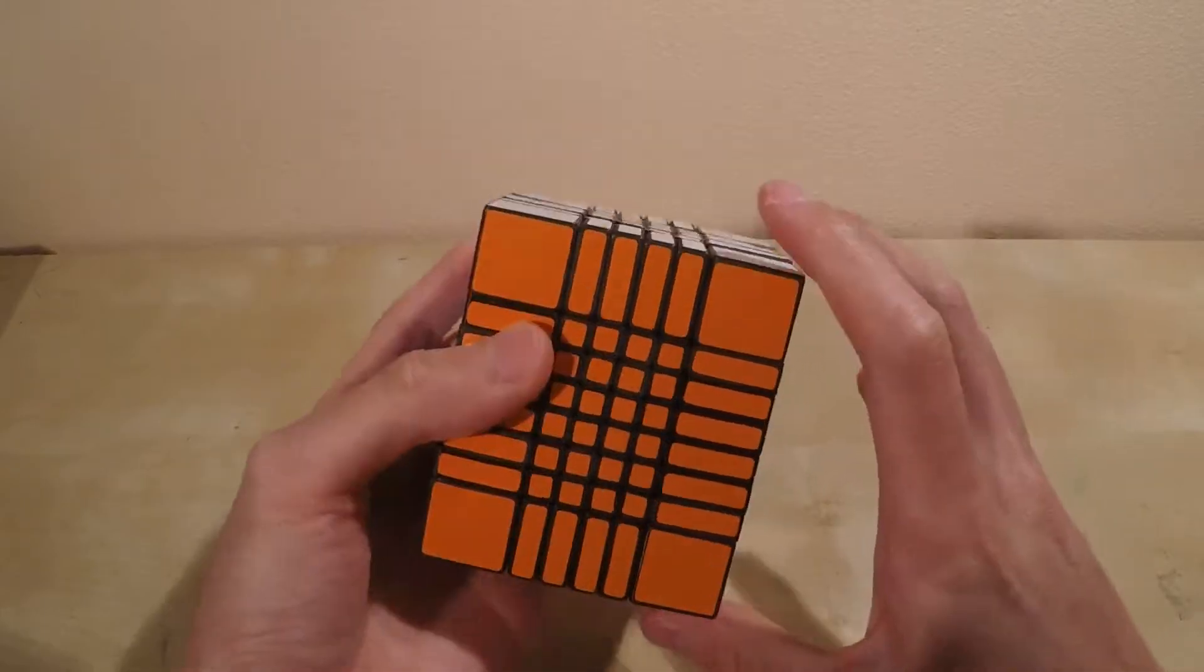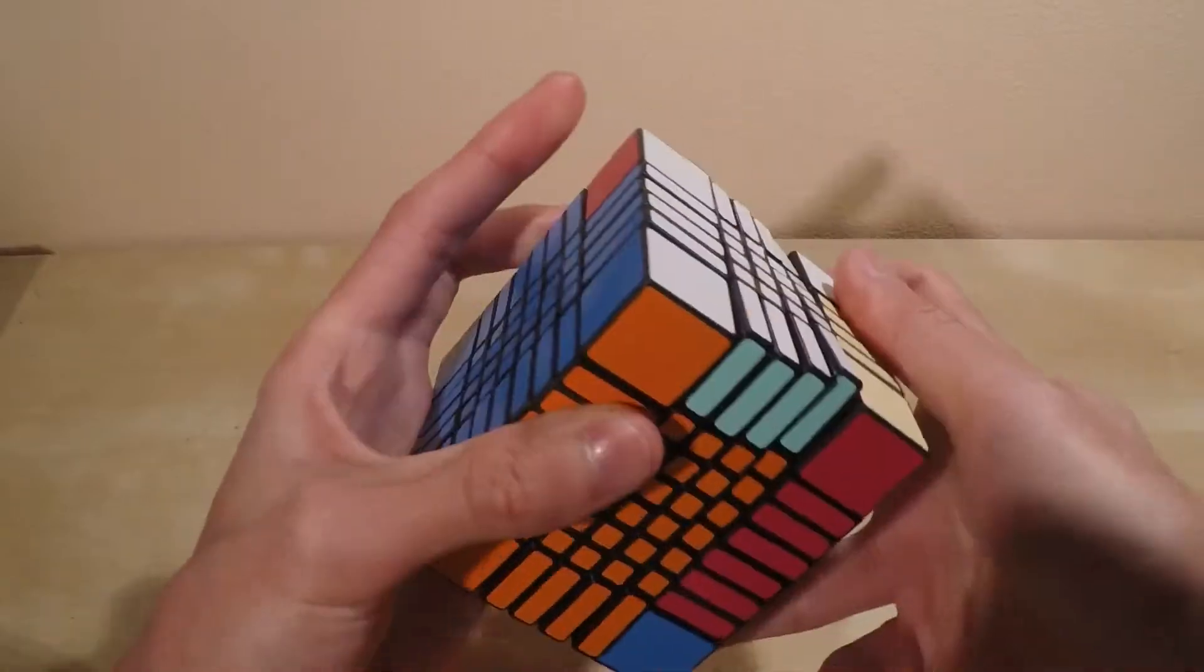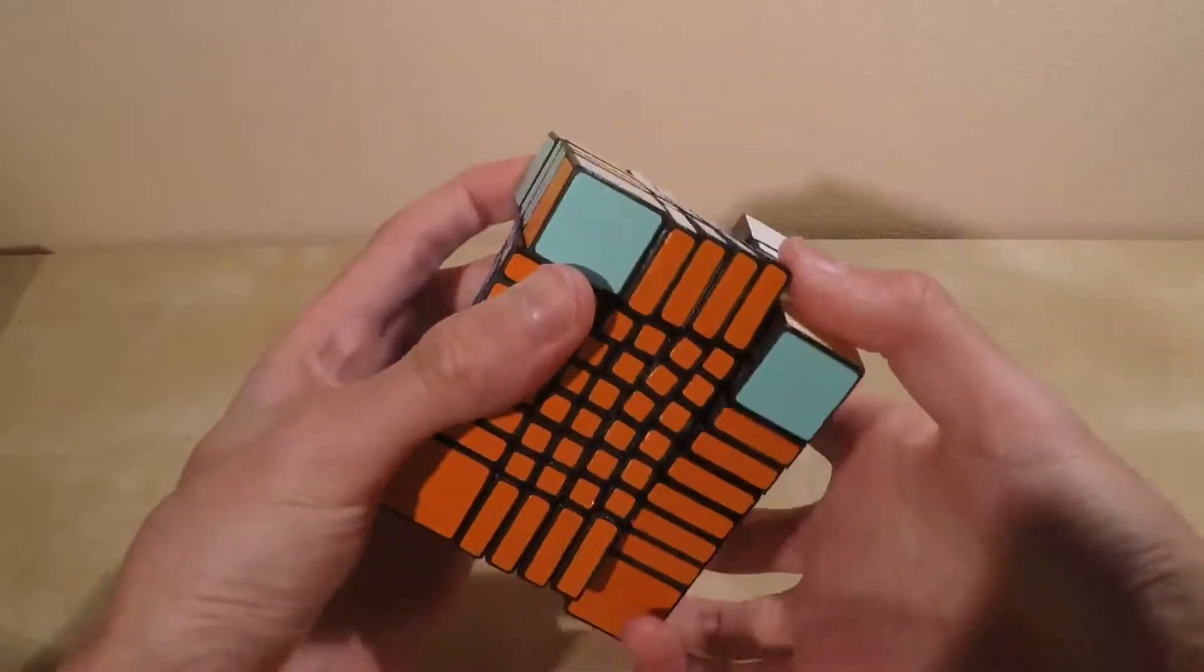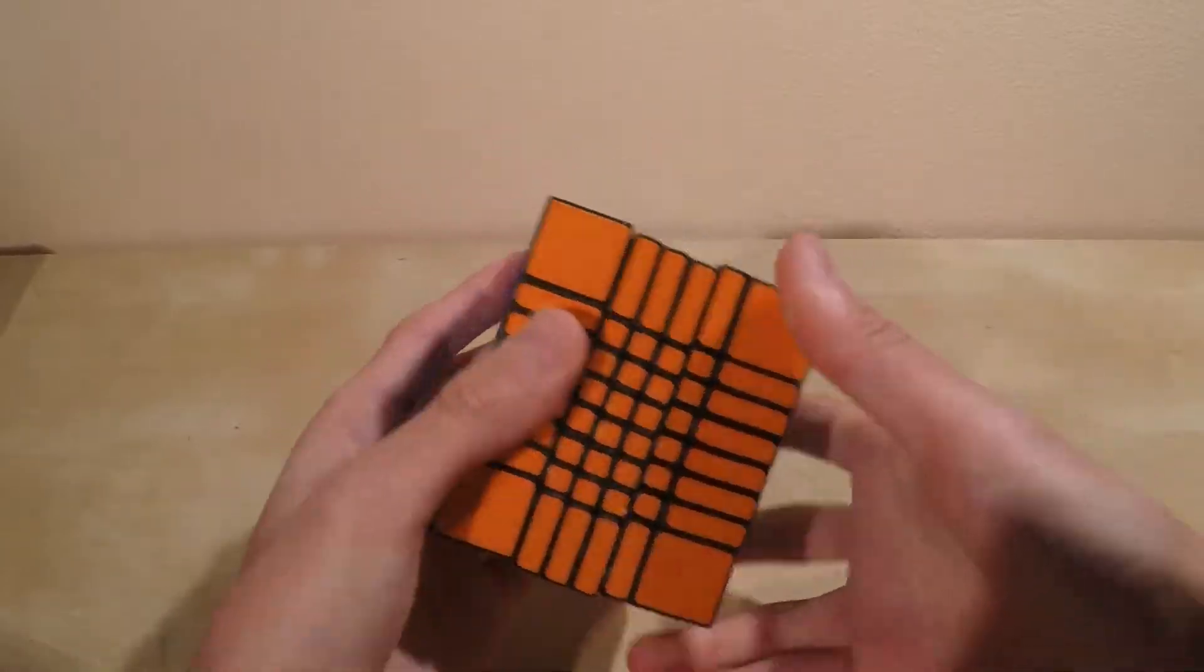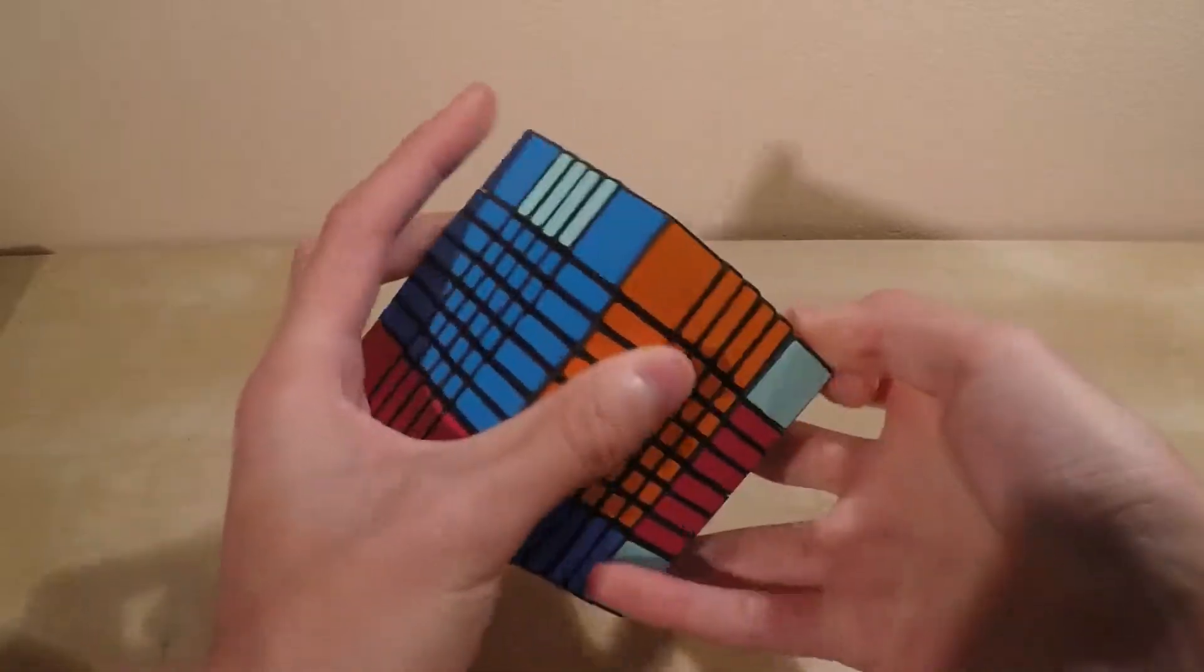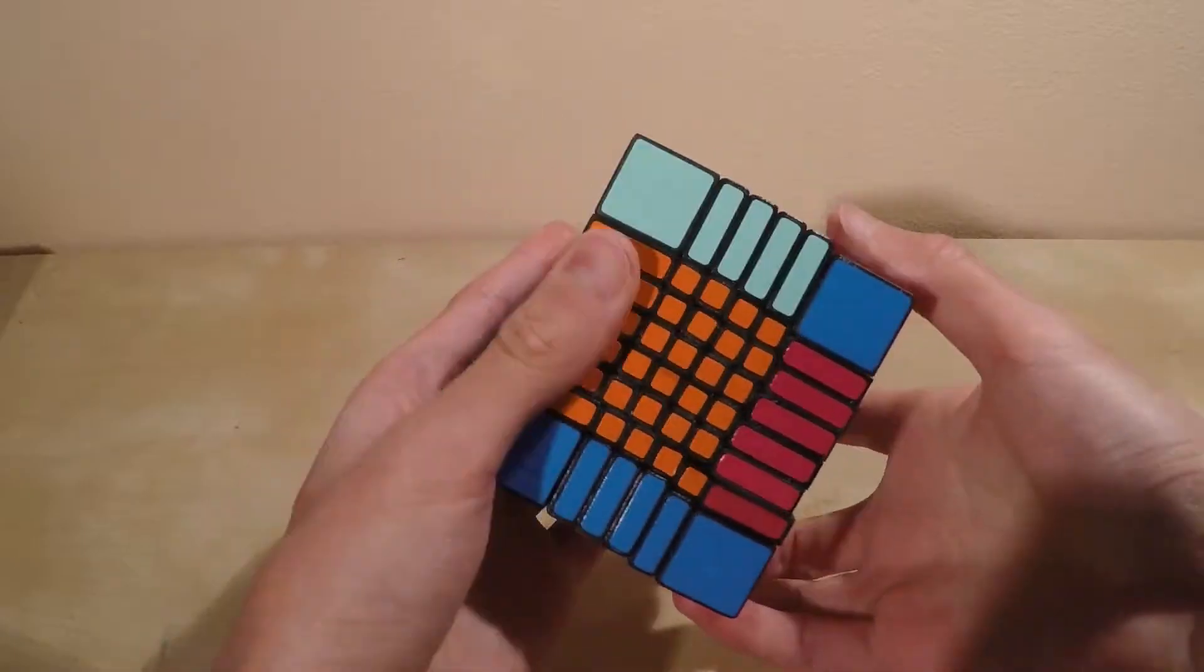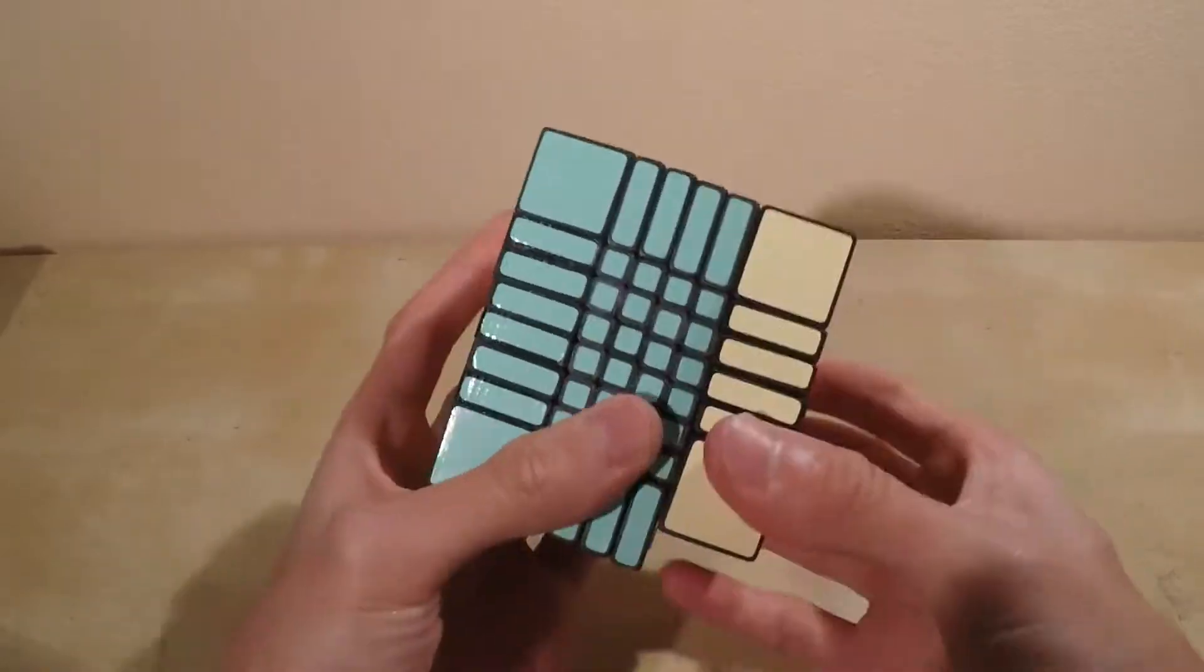How about some cuboid algorithms? Let's see if I remember any of them. That's the edge swap. And let's do this one. Oops. So yeah, it turns pretty nice.